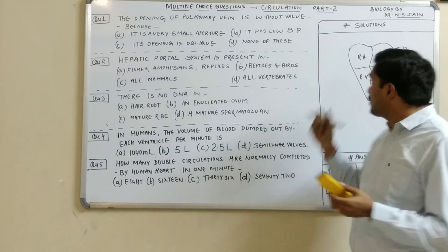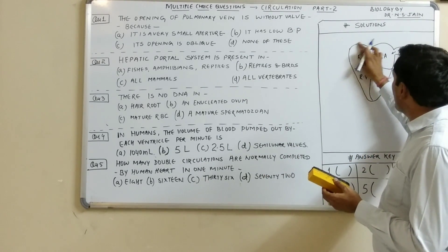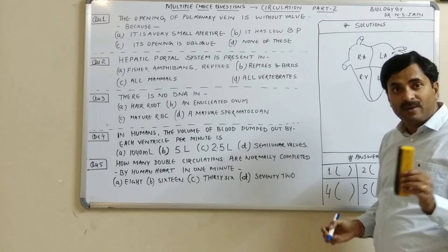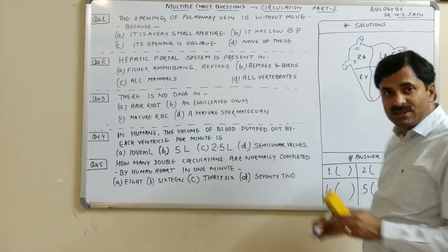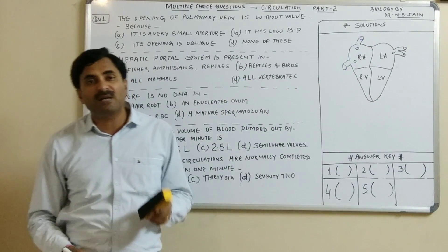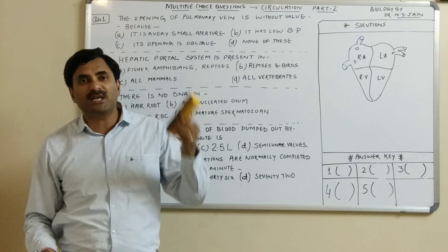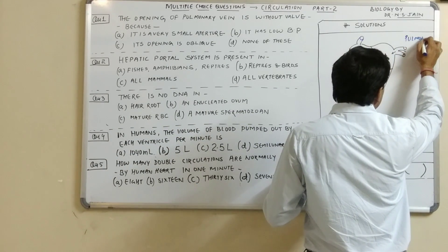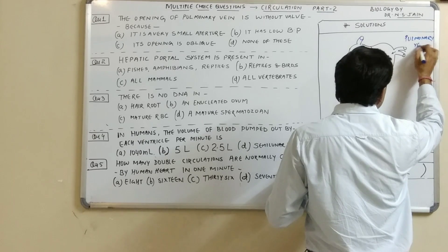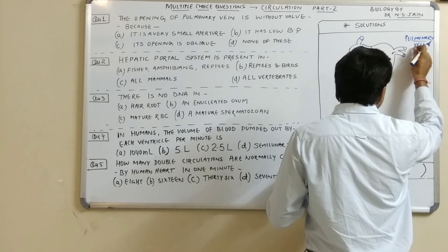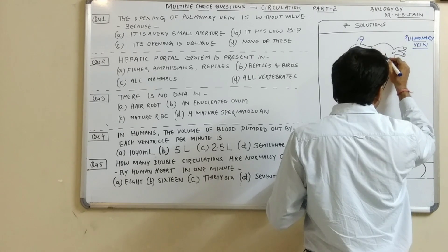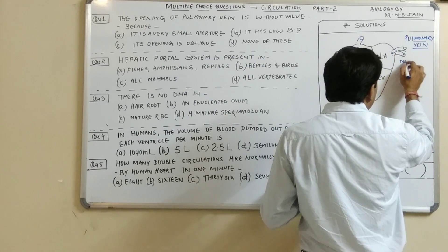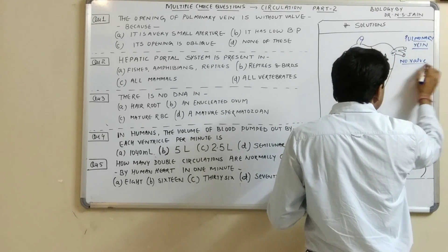In the right atrium, the superior vena cava and the inferior vena cava open, but they are guarded by valves — such as the Sinoatrial valve, Eustachian valve, etc. But the pulmonary vein, which carries oxygenated blood from the lungs, opens into the left atrium, and at its opening there is no valve present.